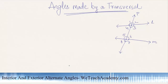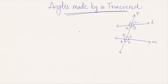Welcome to vteachacademy.com. In this presentation we are going to discuss angles made by a transversal. Here, B is a transversal intersecting the lines L and M at two distinct points, making eight different angles which are represented by their respective numbers.